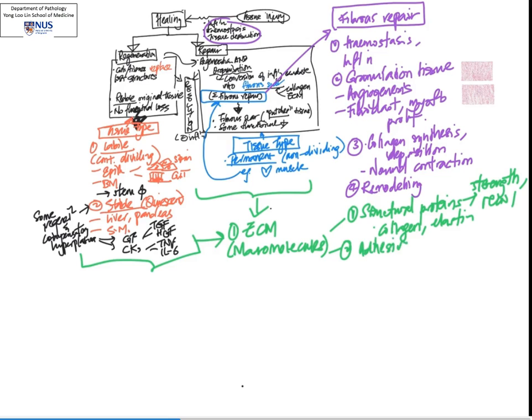The second major type of macromolecule would be the adhesive glycoproteins. These are cell adhesion molecules and they form the glue that holds everything together—the extracellular matrix and the cellular components. The third part of ECM would be the proteoglycans as well as hyaluronin, which provide lubrication as well as resilience to the wound. You can read up more about the specific components of these three major macromolecule types in your textbooks.